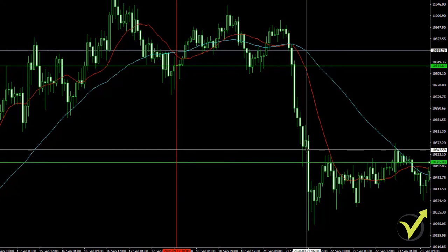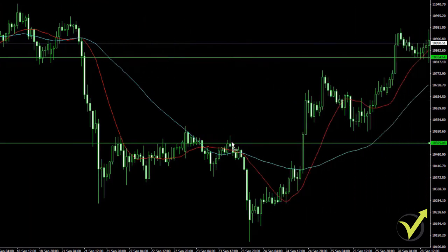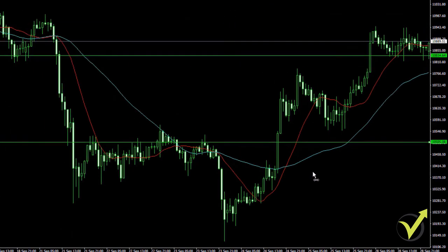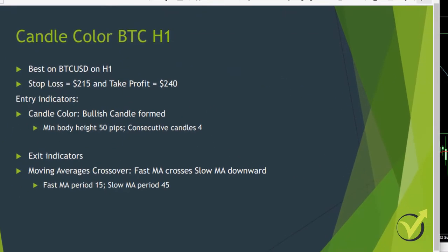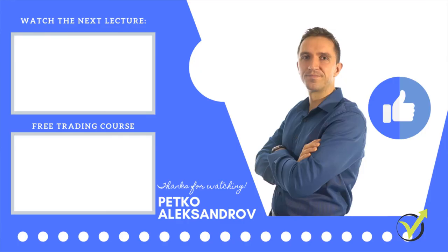So one more time, this is one of my favorite strategies because the chart is very simple and you don't need many indicators. All you need is 4 consecutive candlesticks with the same color, and on the 5th one you open the trade. I'll attach a PDF with the strategy description: 4 consecutive candles with minimum body height of 50 pips, and the exit indicator is the moving average cross of the 15 and 45 periods. Thanks for watching — if you found this strategy interesting, give it a try, like the video, and subscribe for more free content.